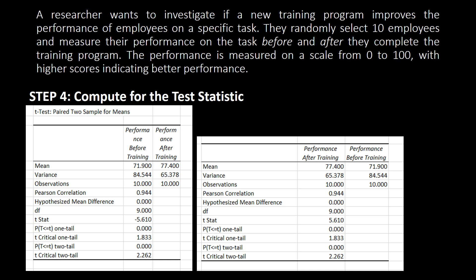Moving on to step number four: computing the test statistic. We need the test statistic when reporting the data analysis table. You can locate it under T-stat. The T-stat value is negative 5.610. In reporting, we use 5.610, because the negative sign only indicates that the mean of the first variable (before training) is lower than the mean of the second variable (after training).